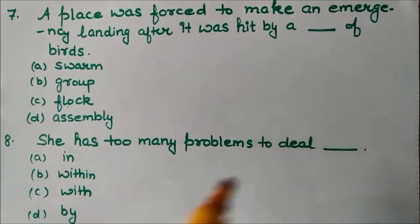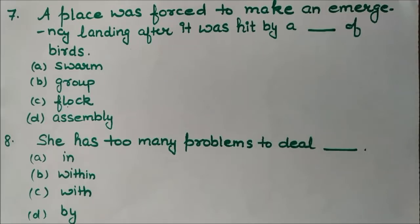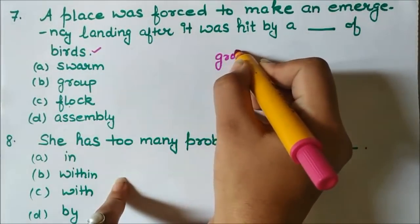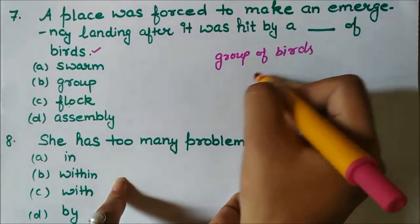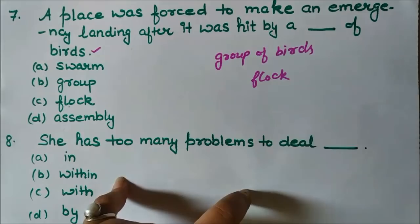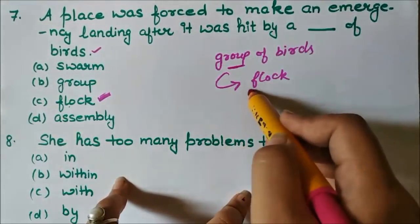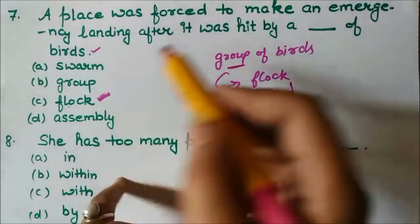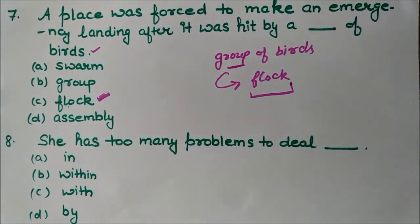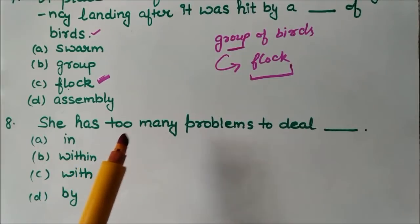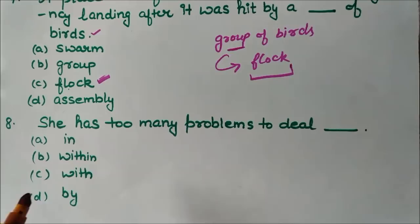Next question: 'A plane was forced to make an emergency landing after it was hit by a ___ of birds.' A dash of birds means a group of birds, and the collective noun for birds is 'flock.' You cannot just say 'group of birds' — the correct term is 'flock.' Answer: 'hit by a flock of birds.'